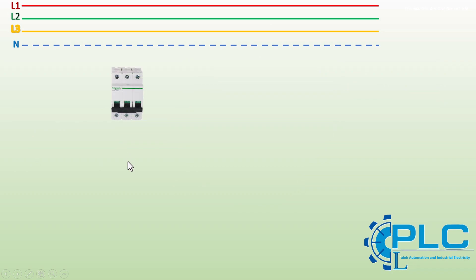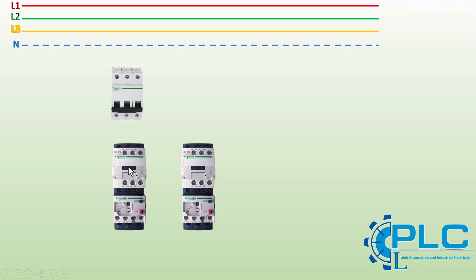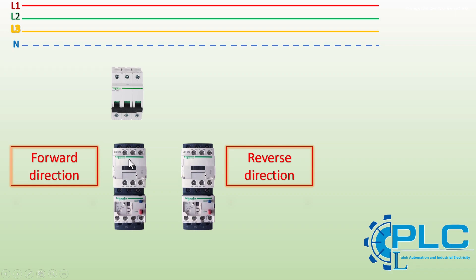In our project, we will use two contactors to control this phase swapping automatically. One contactor will connect the motor to run in the forward direction, and the second contactor will reverse the motor's direction. However, both contactors should never be active at the same time, as this could cause a short circuit.